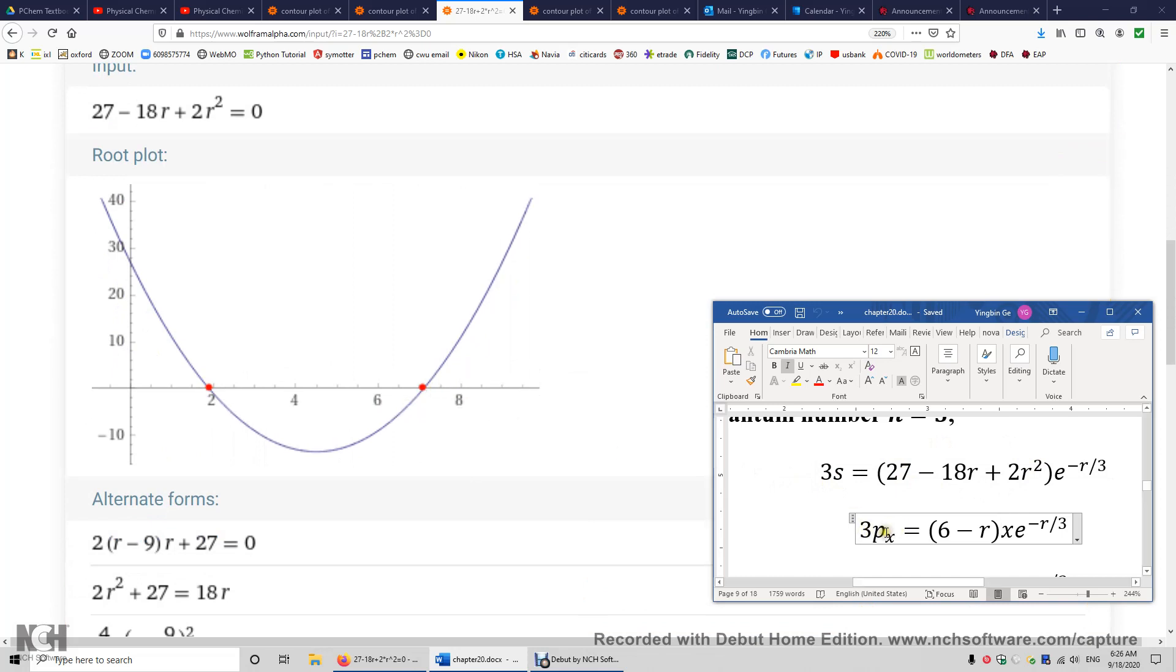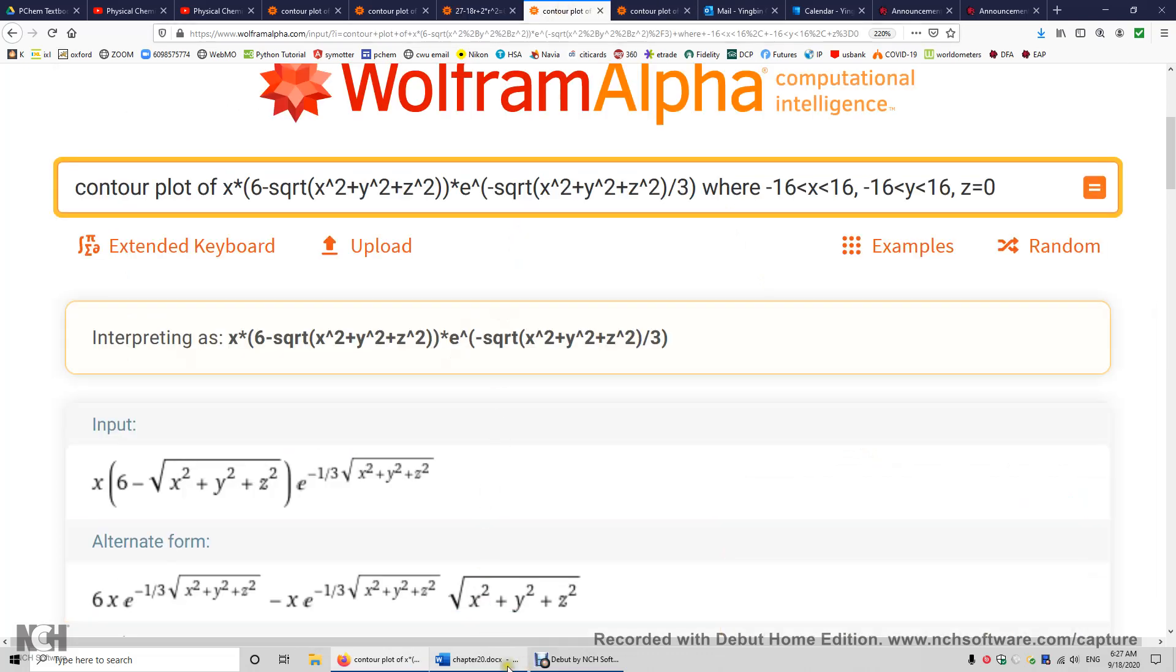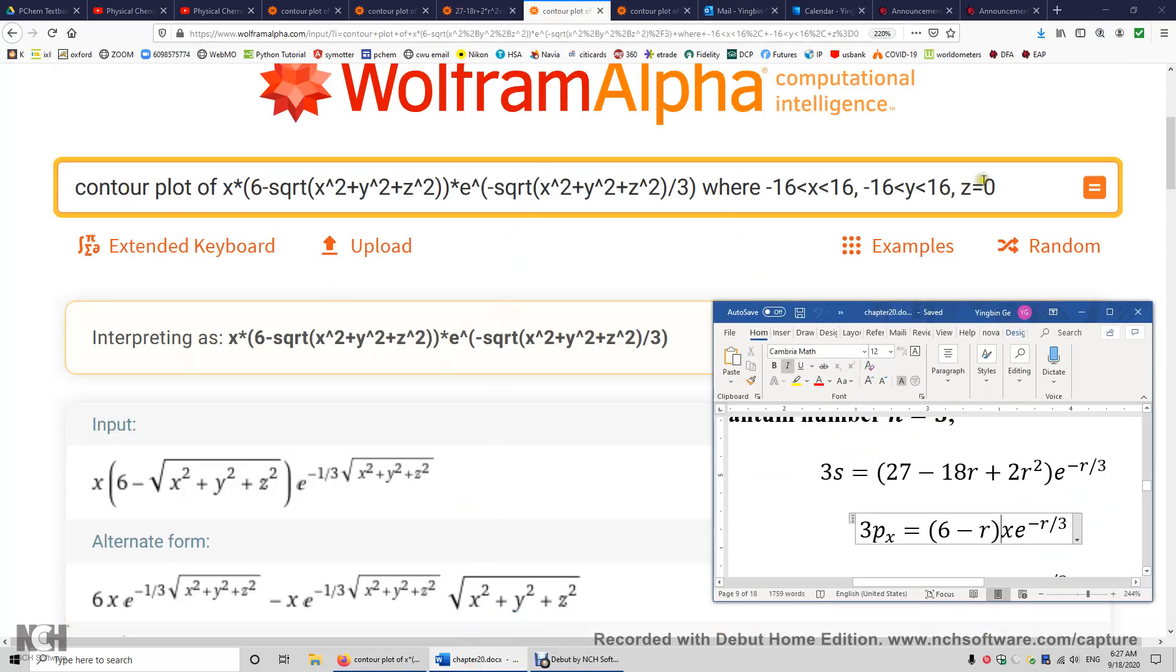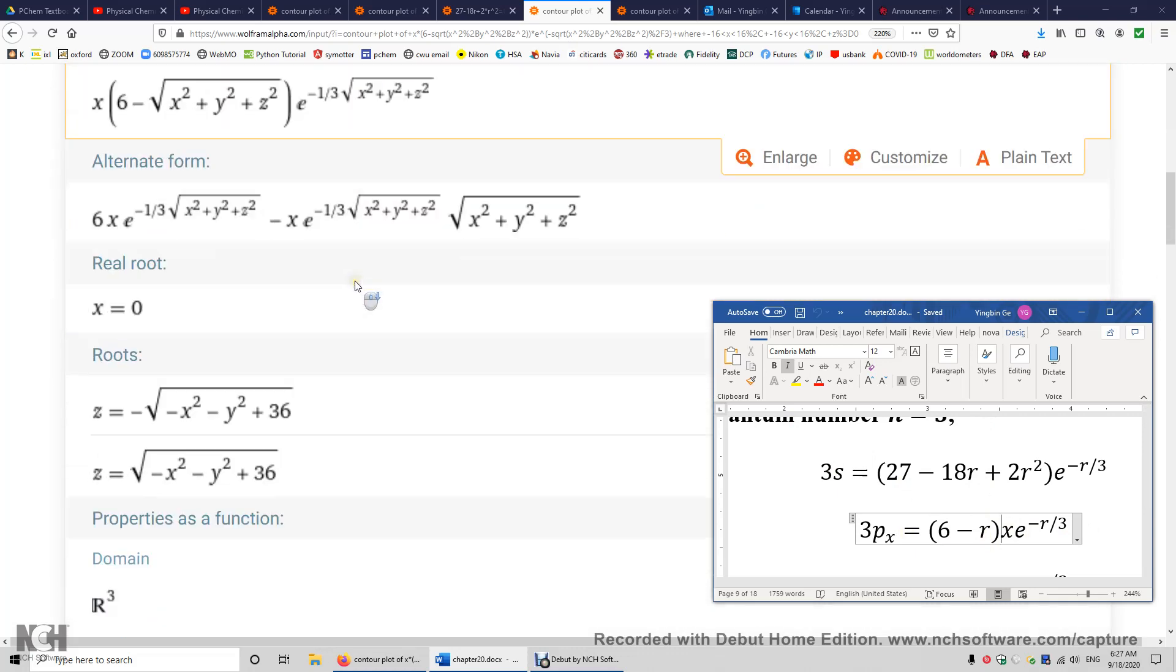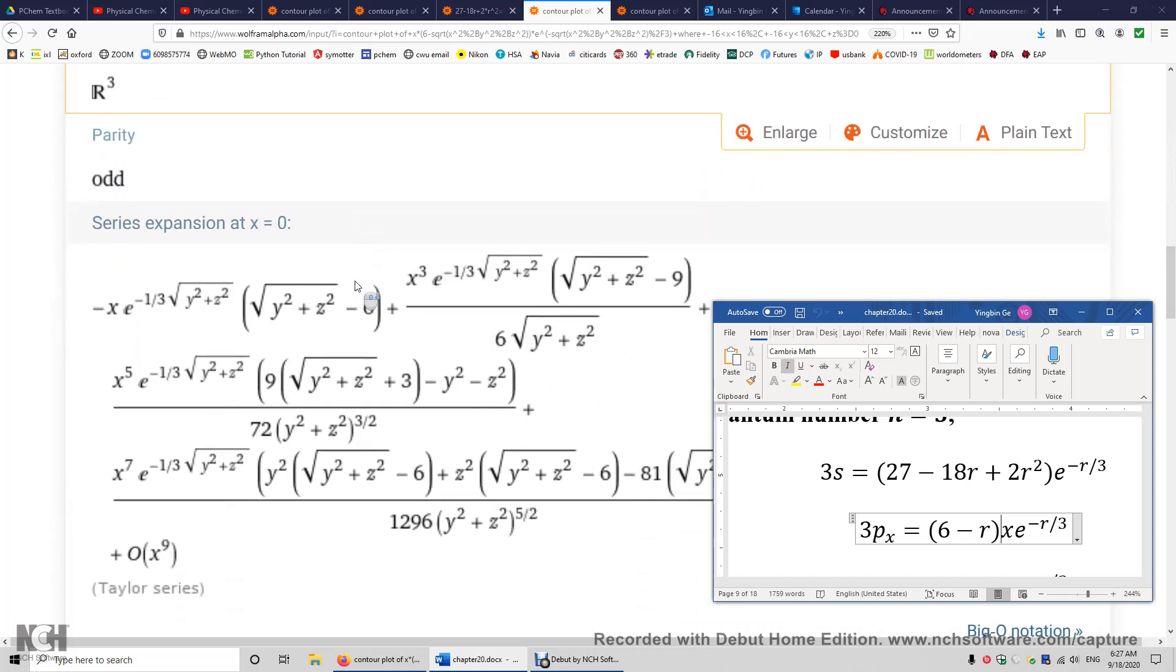So now let's work on the 3px orbital. So again, I was just entering this expression here. x times 6 minus r times e to the power of negative r over 3. I set the range, so it's just exactly the same here. This equation is the same as this equation, except r is replaced by its mathematical expression in terms of x, y, and z.